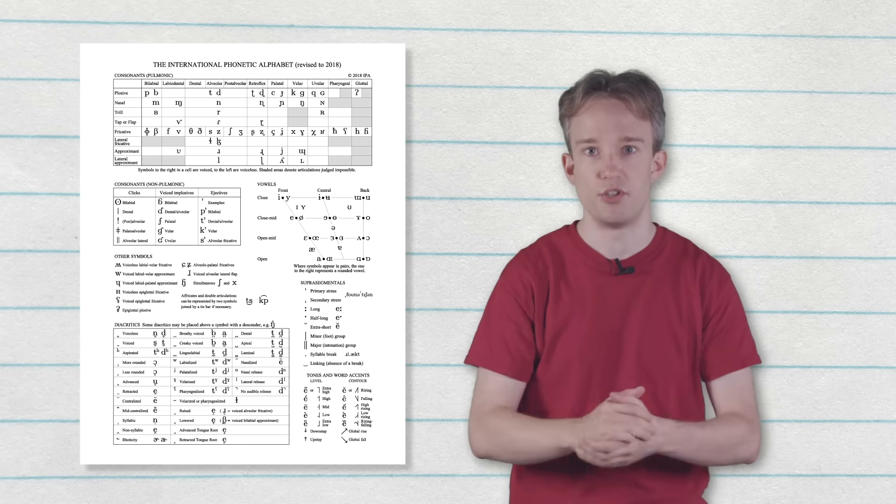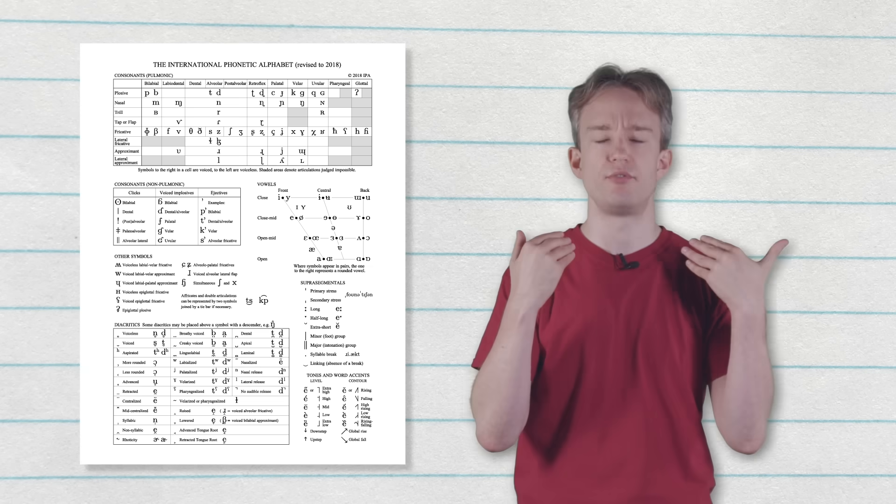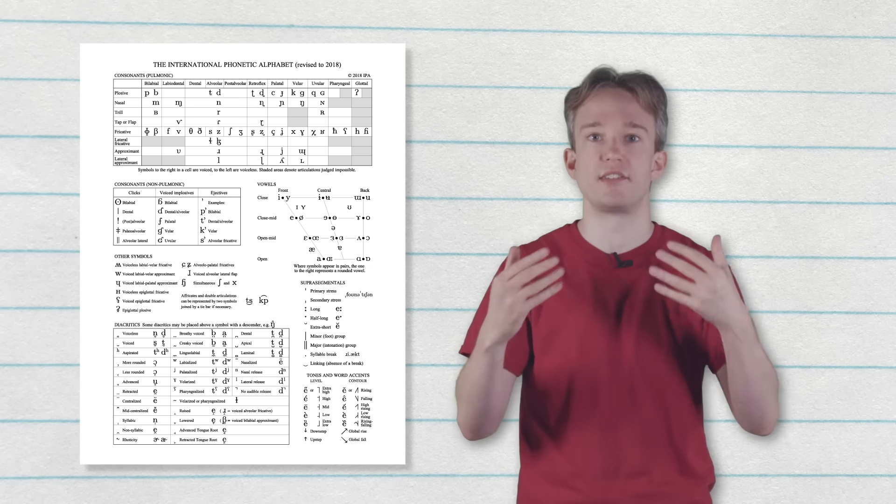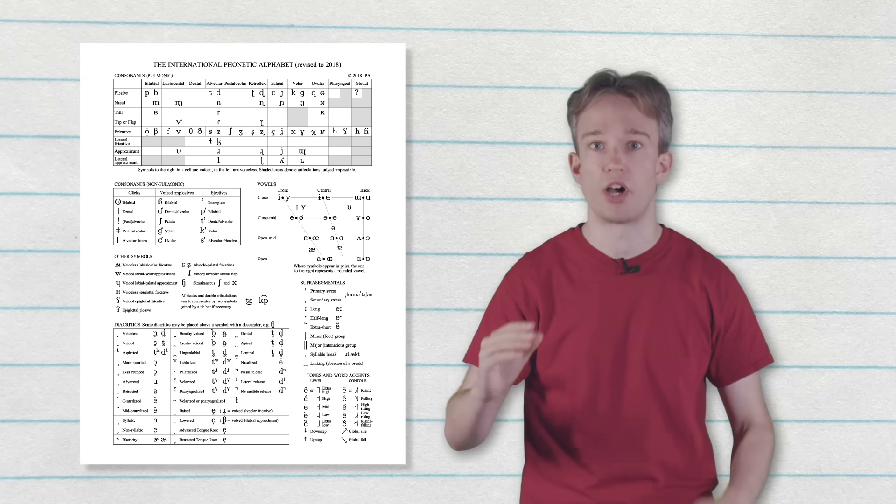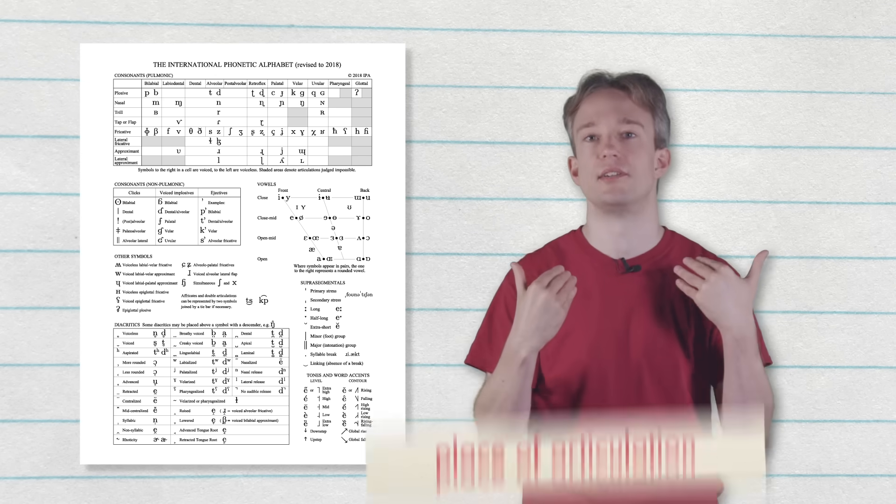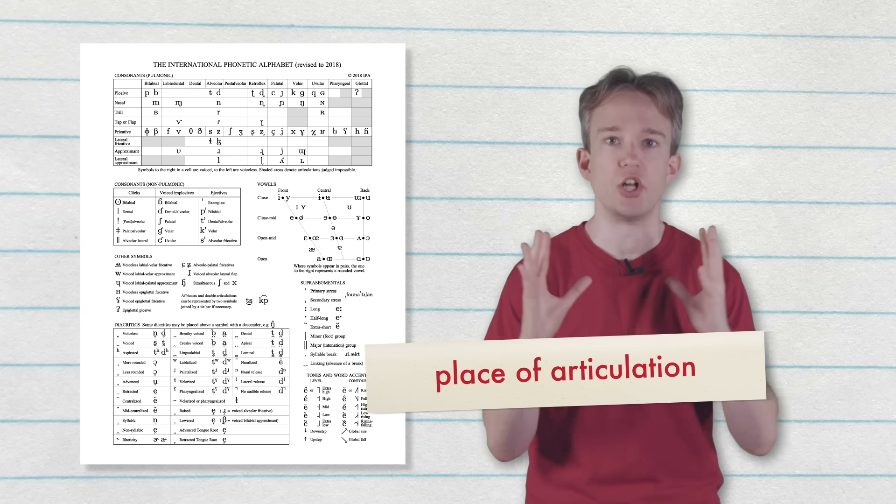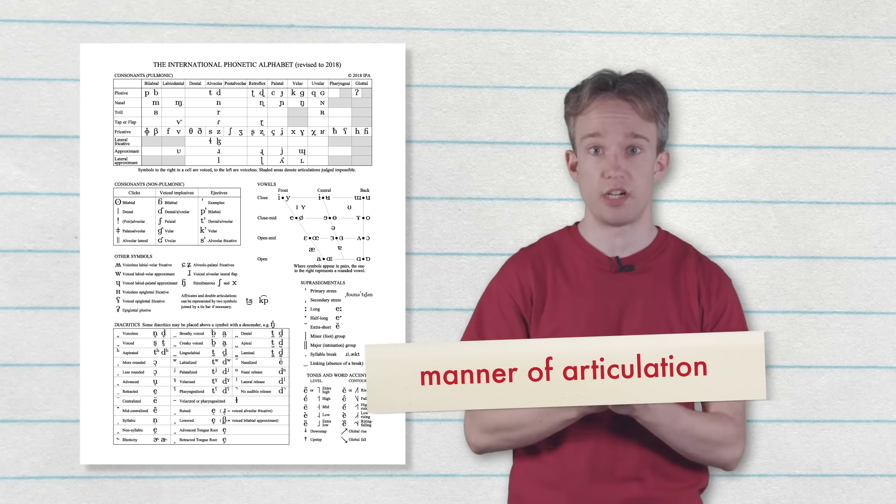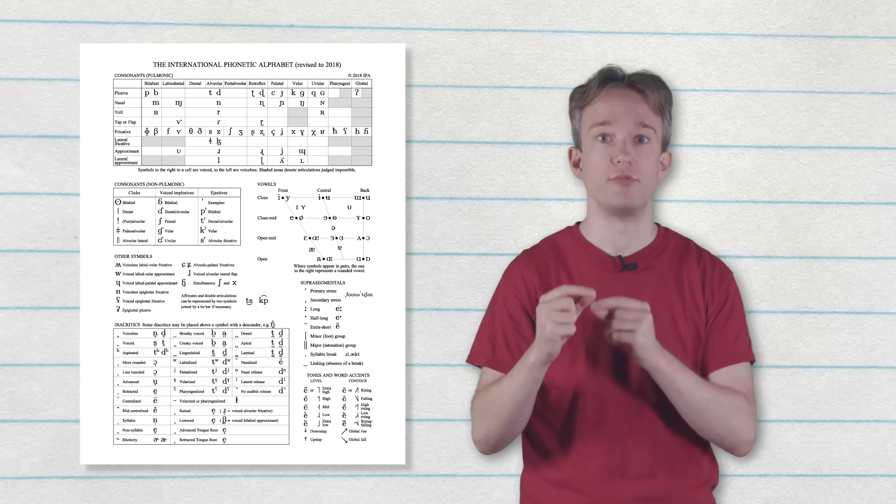When you make a sound, you push air out of your lungs, and then you cause some sort of constriction in your mouth or throat to create that particular sound. Two things that are really important are where, in your mouth and throat, that constriction is—that's called the place of articulation—and how much constriction you're making, that's the manner of articulation. The chart is organized based on those two factors.